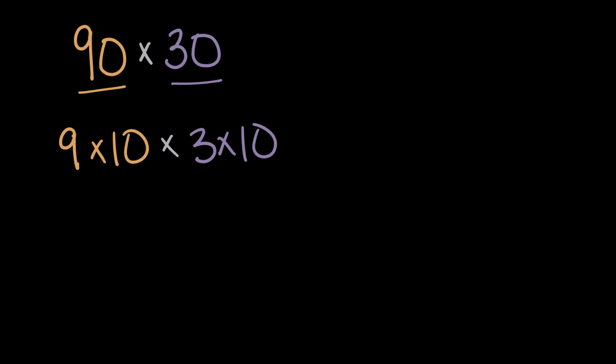Let's try another example where we're multiplying tens like this. Let's do something like, let's say, maybe 90 times, how about 30, 90 times 30. So the first thing I'm going to do is break up these numbers so that I have tens, because again, for me, tens are easier to multiply than numbers like 90 and 30. So for 90, I'll write nine times 10, and for 30, I'll write three times 10. The expressions are equivalent, we've just written it in another way.